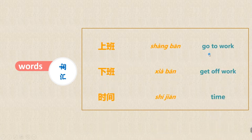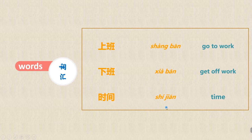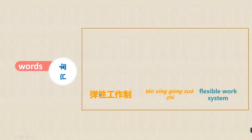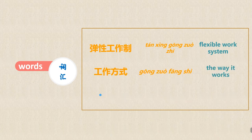Now let's look at the words. 上班 means 'go to work'; 下班 means 'get off work'; 时间 means 'time.' 上班，下班，时间。非常好。